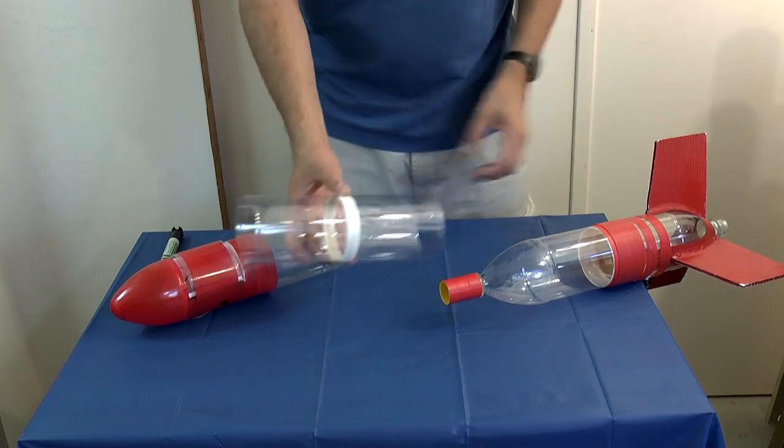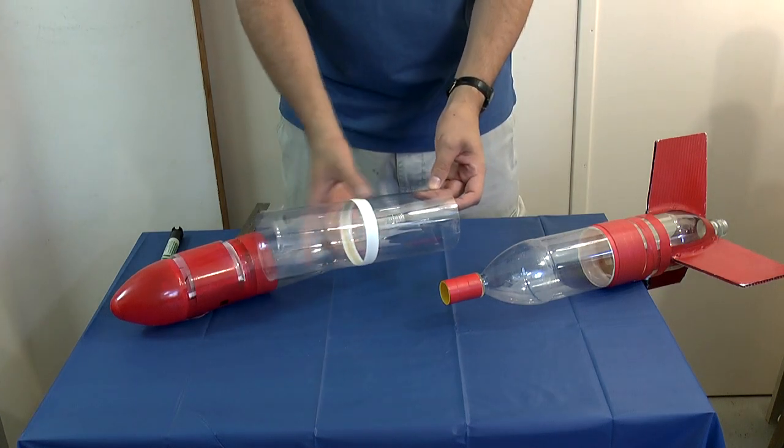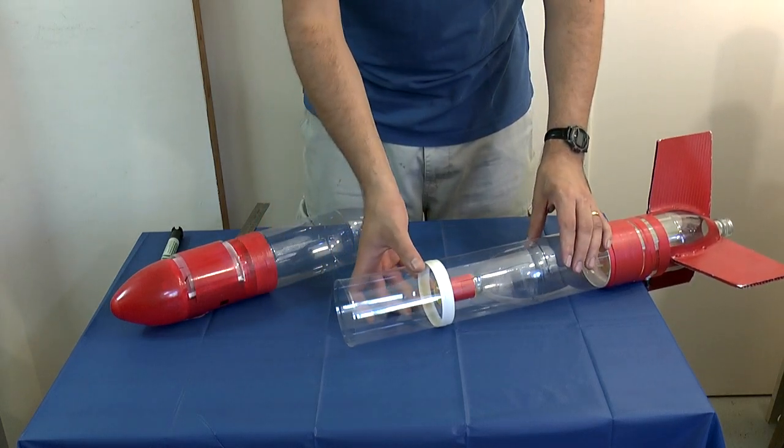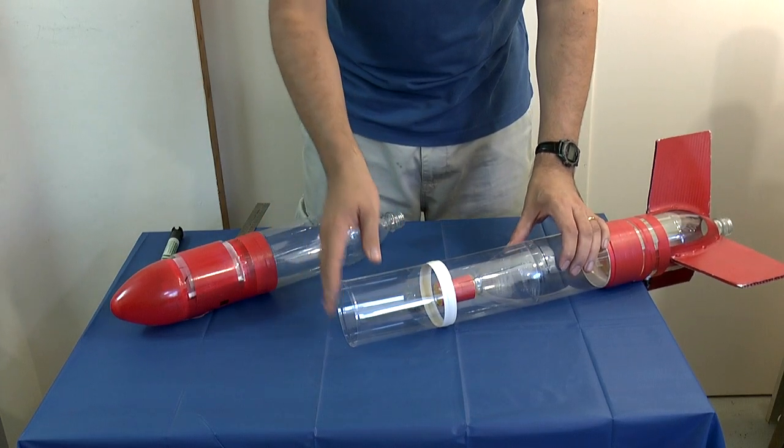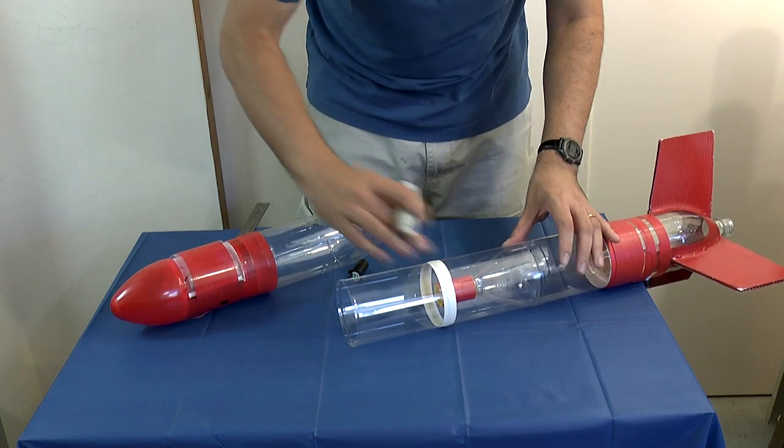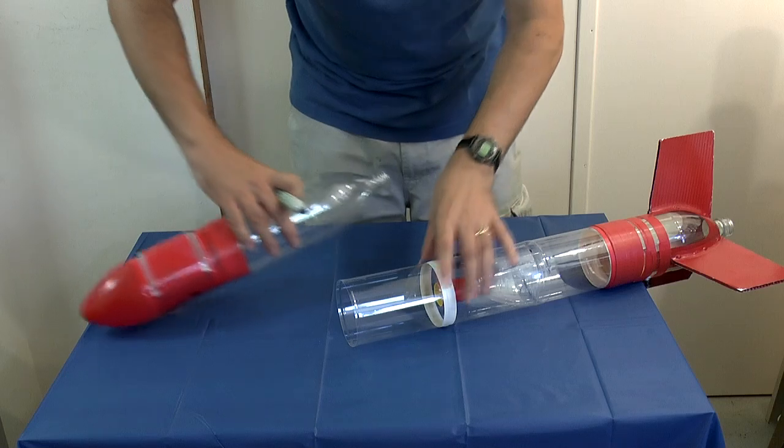The last step is to cut it to the right length. Now this will depend exactly on the type of bottles you're using. The easiest way we've found is put it over the rocket and mark where the bottom is, and do the same for the other side.